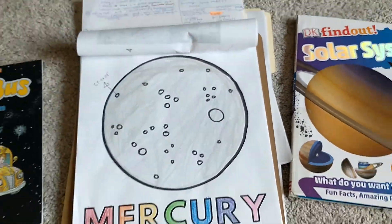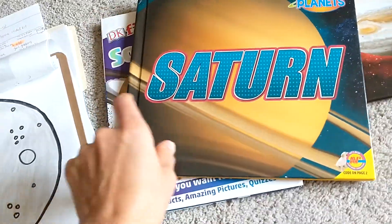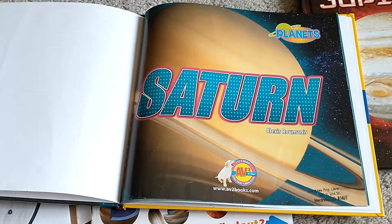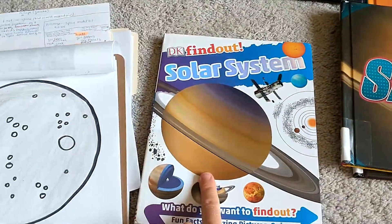What I would do on a planet day is we would read a planet book. And I really like these books by I think they're Alexis Roumanis. I really like her books. They're short and sweet. And then we'd read our spine.